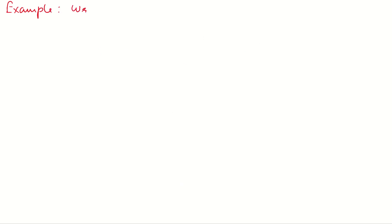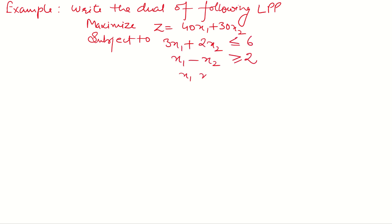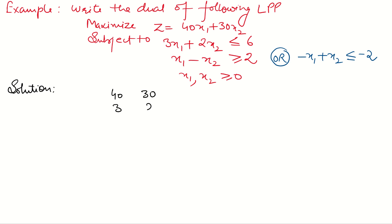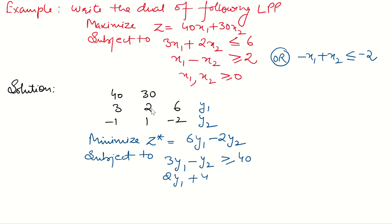Case 2: when some signs are given greater than or equal to. To convert into less than or equal to, multiply by minus 1 on both sides. Example: write the dual of the following primal problem. Maximize z = 40x1 + 30x2, subject to 3x1 + 2x2 ≤ 6, and x1 − x2 ≥ (some constant). Here x1 − x2 ≥ is converted to less than or equal to by multiplying by minus 1. To write the dual, copy coefficients and constants, take variables y1 and y2, and read column wise. Minimize z* = 6y1 − 2y2, subject to 3y1 − y2 ≥ 40, 2y1 + y2 ≥ 30, where y1 and y2 are both positive.